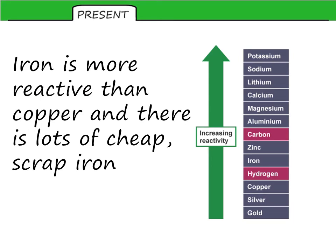So iron is more reactive than copper and there is lots of cheap scrap iron. So you can see here that iron is above copper in the reactivity series. That means that we can use iron to displace copper from the copper compound that is in the leachate.